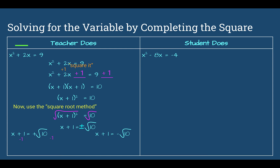Set x plus 1 equal to the positive version and to the negative version. I'm keeping it as a square root, not changing it to a decimal. To solve for x, subtract 1 from both sides: square root of 10 minus 1, or negative square root of 10 minus 1. In general, we write the constant first, so swing the negative 1 out front: negative 1 plus or minus the square root of 10. Our final solutions are negative 1 plus or minus the square root of 10.